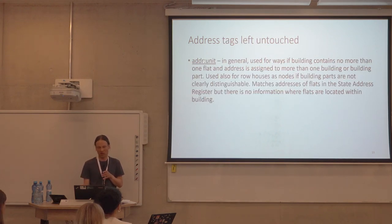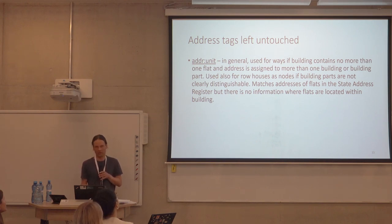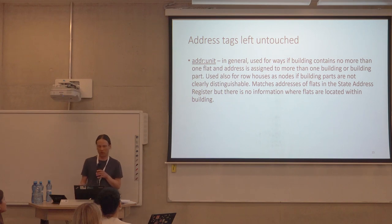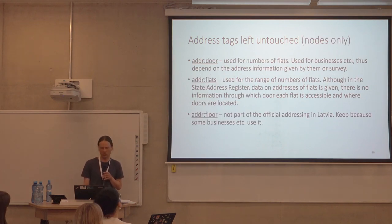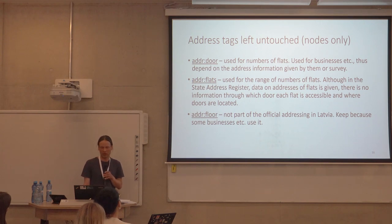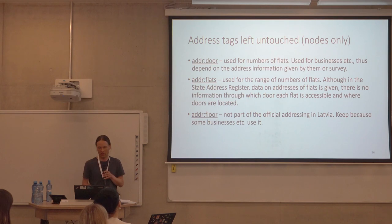Some tags were left untouched. The tag addr:unit is generally used for ways — building polygons — if a building contains no more than one flat, or if an address is assigned to more than one building or building part, and also in some cases for row houses. The tag addr:door is used for the number of flats, for example for some businesses. The tag addr:flats is defined in the state address register but there is no information about which flat is accessible or where entrances are located. And addr:door tags used for some businesses are not part of official addressing in Latvia.